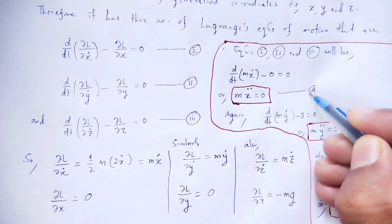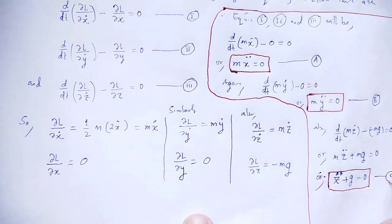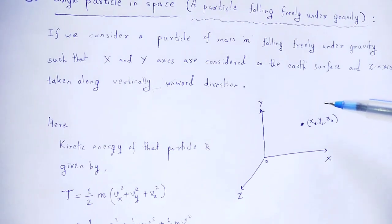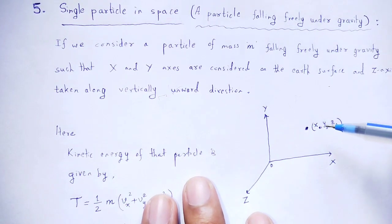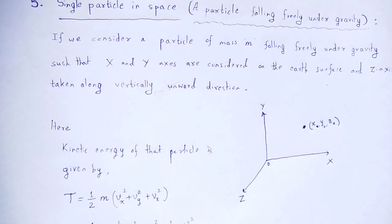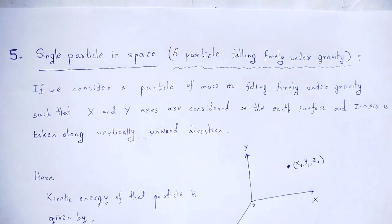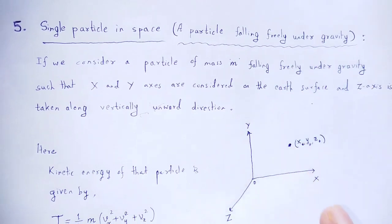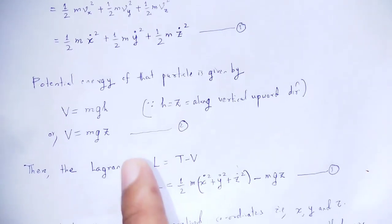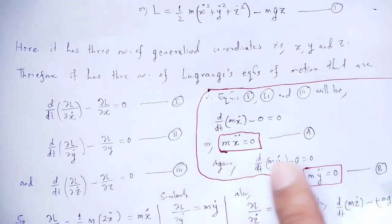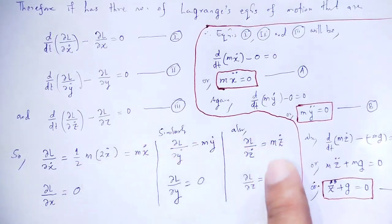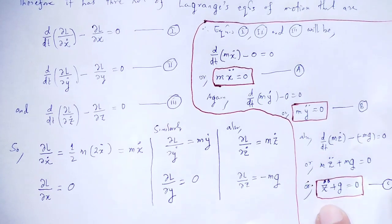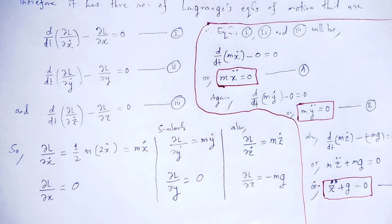So the equations of motion are: (a) ẍ = 0, (b) ÿ = 0, and (c) z̈ + g = 0, for a particle freely falling under the effect of gravity. In this video, we have used Lagrange's equation of motion for a single particle falling under gravity, and derived the equations of motion using kinetic energy, potential energy, and the Lagrangian with three generalized coordinates. With this, let me wind up the session. Thank you.